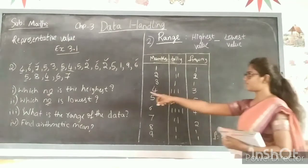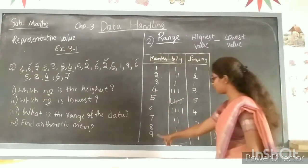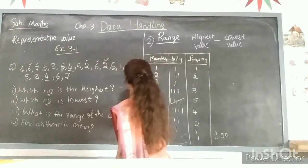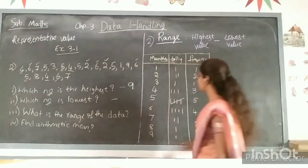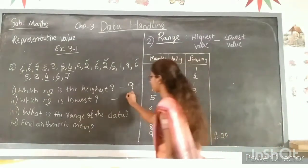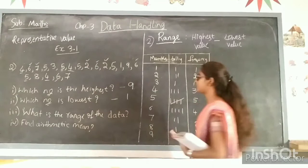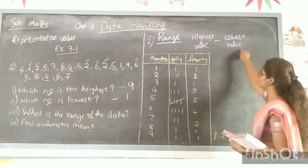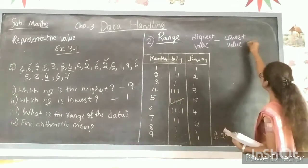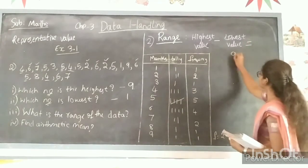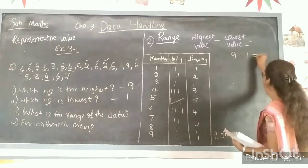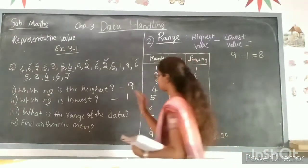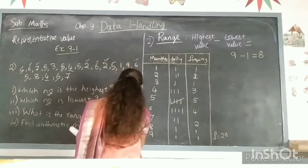Which number is the highest? As we see in the marks column, 9 is the highest number. Which is the lowest number? That is 1. What is the range of the data? Range is nothing but highest value minus lowest value, so range equals 9 minus 1, which gives us 8. The range of the given class assessment is 8.